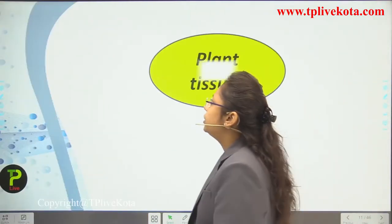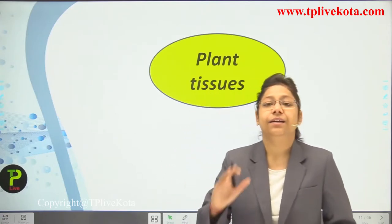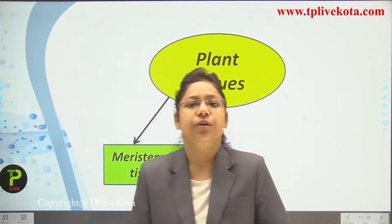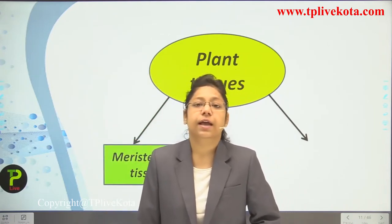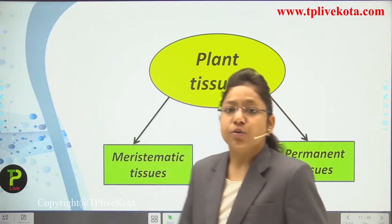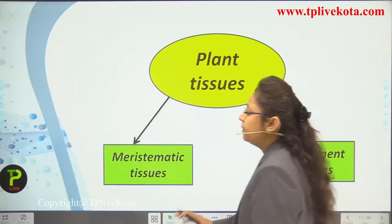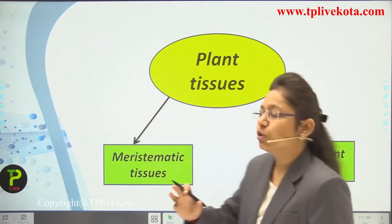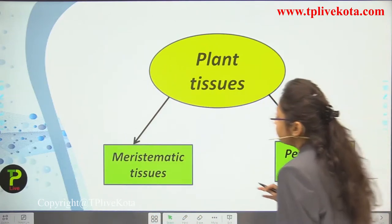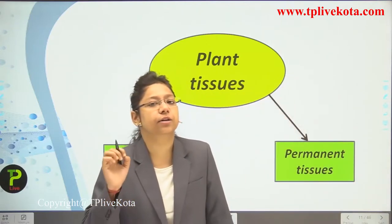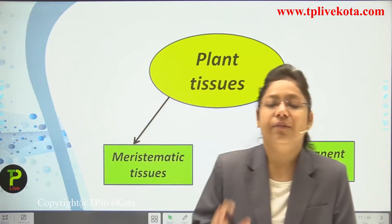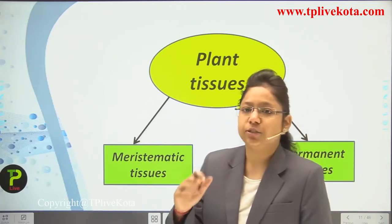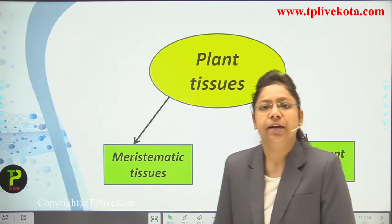Now we are going to learn about plant tissue. There are two types of plant tissues: meristematic tissue and permanent tissue. Meristematic tissues are dividing tissues. Permanent tissues are non-dividing — once formed, they become permanent.